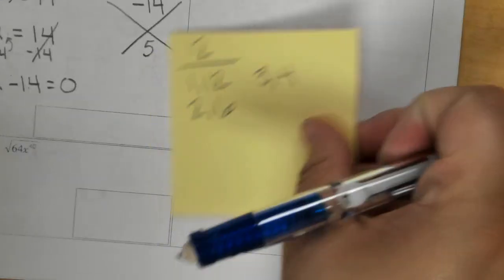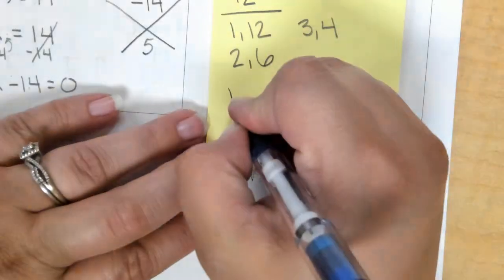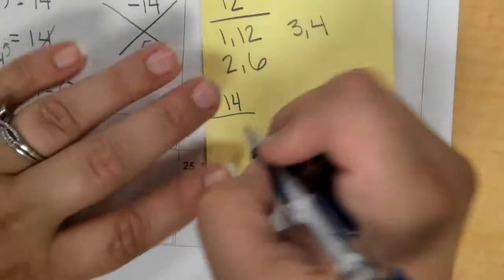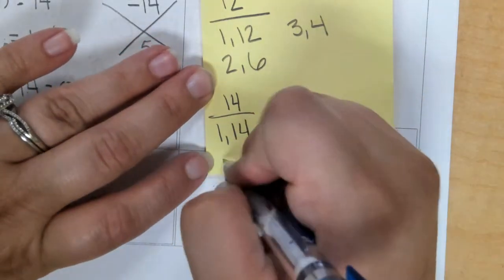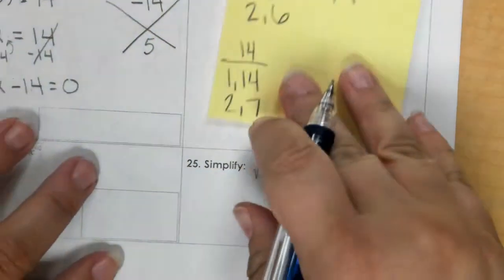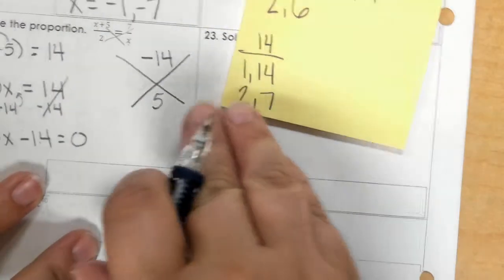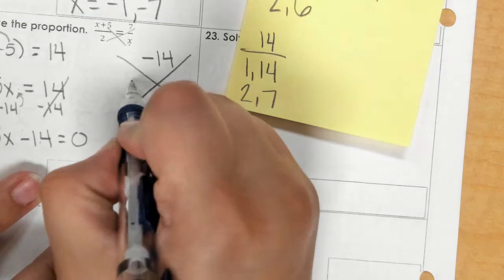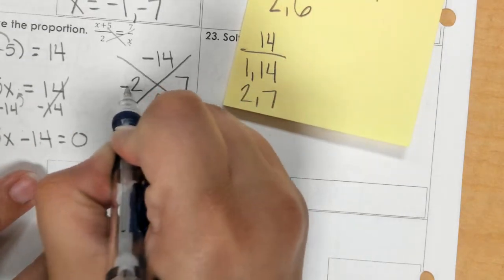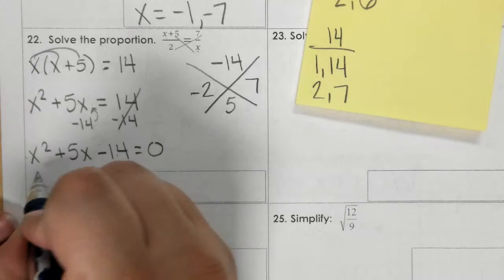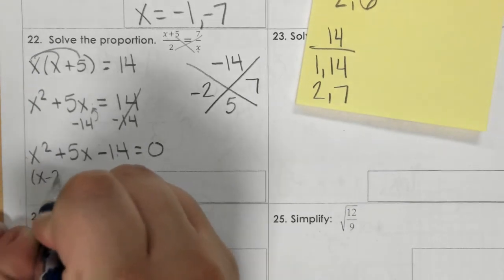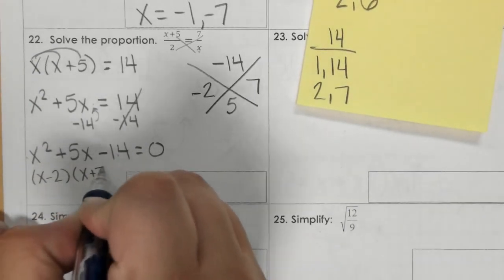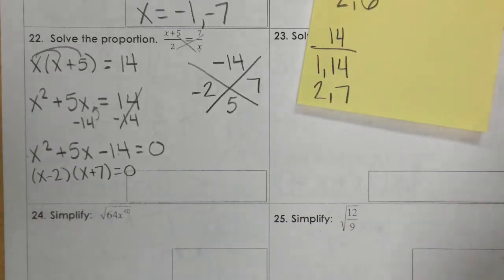So let's look at our factors. So 14, we have 1 times 14, 2 times 7. So that means that 2 and 7 could subtract to make a 5, if I subtract the 2. So I would have x minus 2, x plus 7 equals 0.